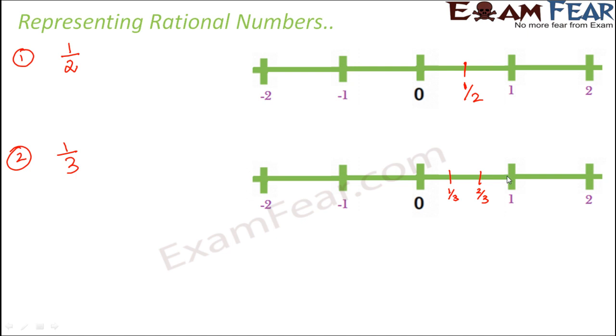What will be this point? This would be 1 by 3 plus 1 by 3 plus 1 by 3, that is 3 by 3. So 3 by 3 is equal to 1. Right? So in this way you can locate this point as 1 by 3. So we could locate the point 1 by 3.